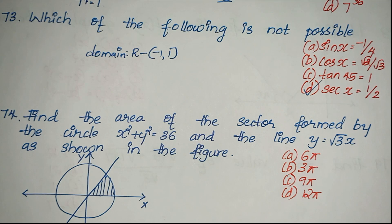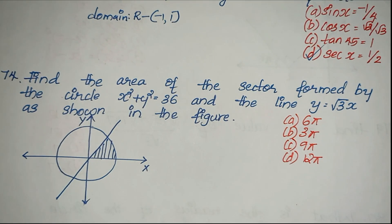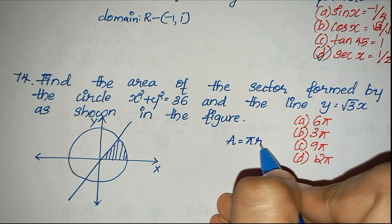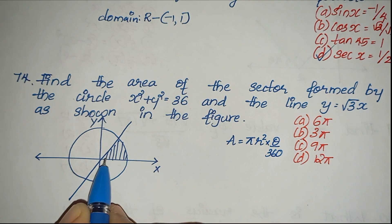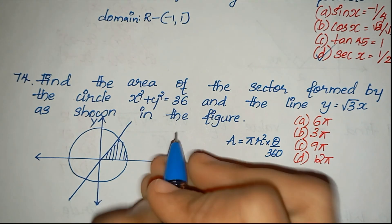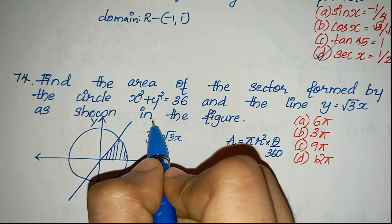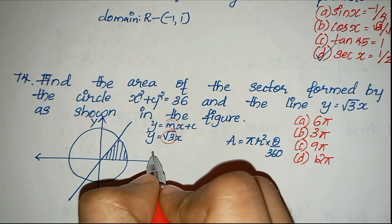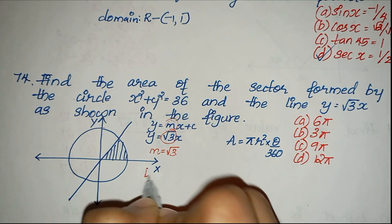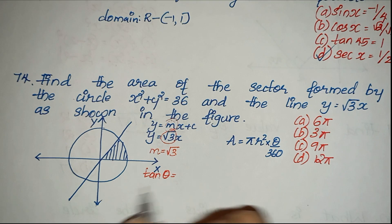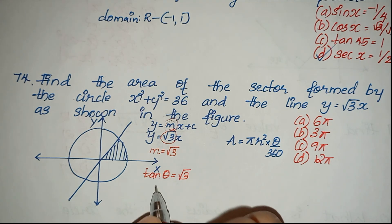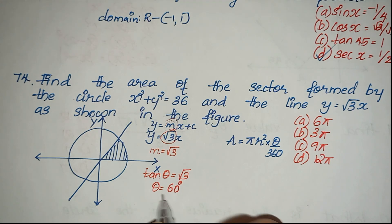Find the area of the sector formed. To find the area of a sector, the formula is: A equals pi r squared into theta by 360. Now the line y equals root 3x can be written in the form y equals mx plus c. From this, m equals root 3. Since slope m equals tan theta, and tan theta equals root 3, theta equals 60 degrees.